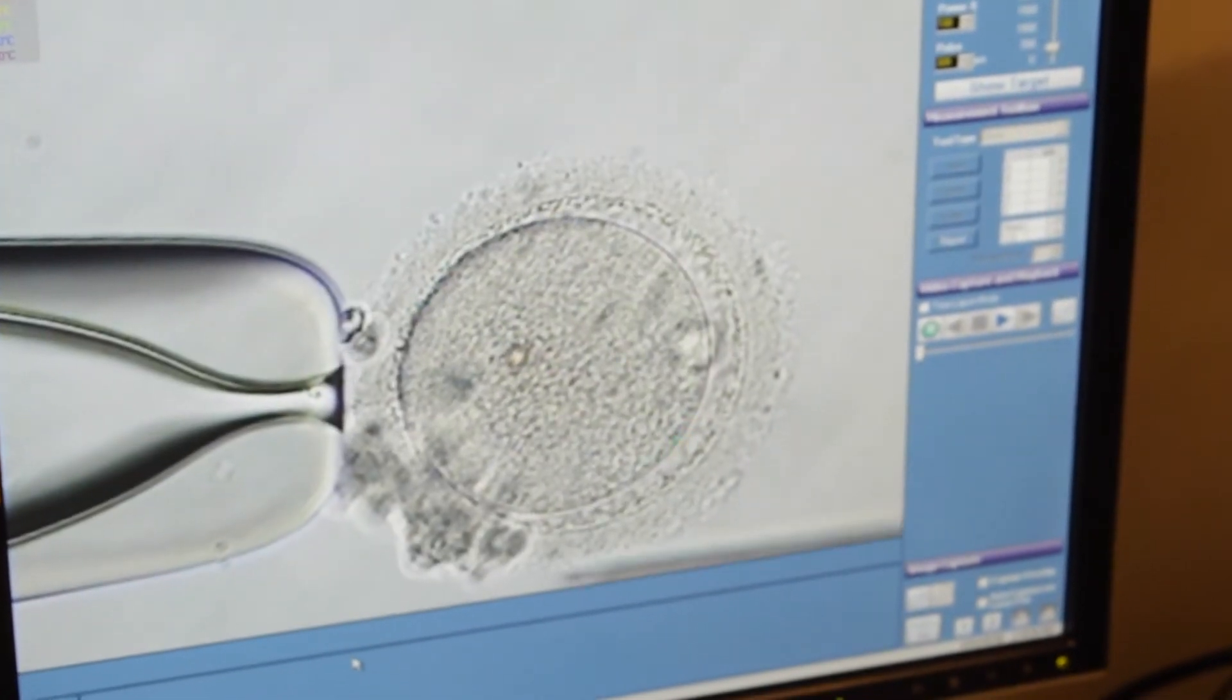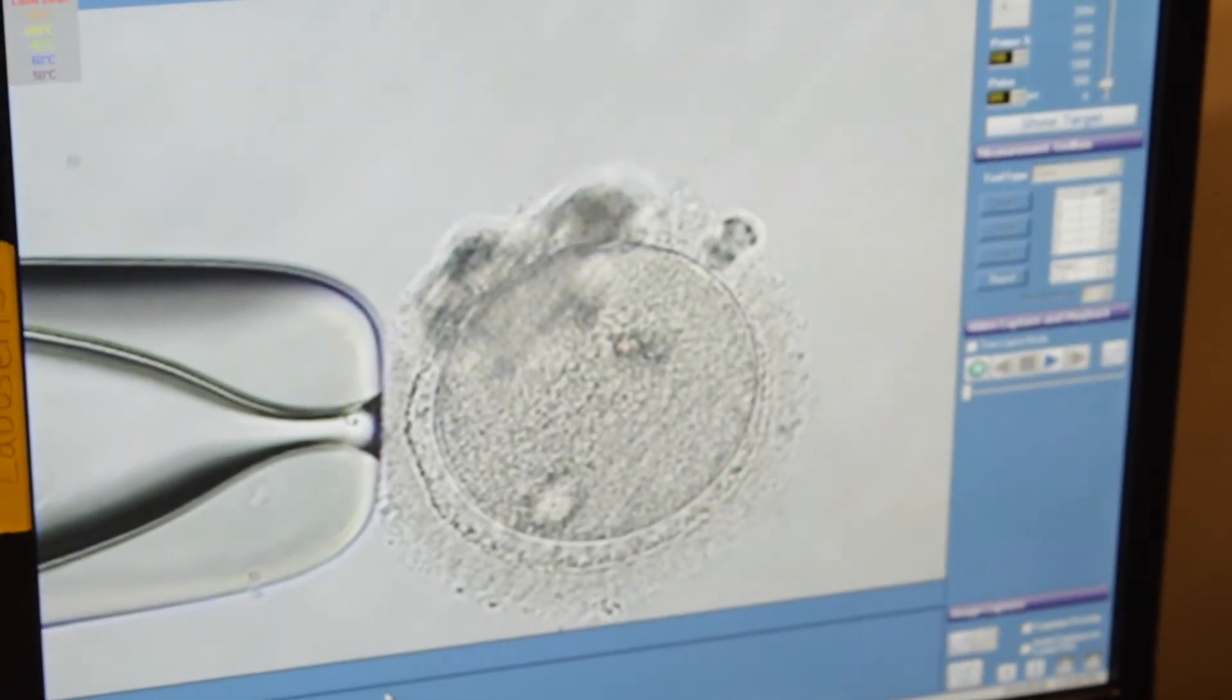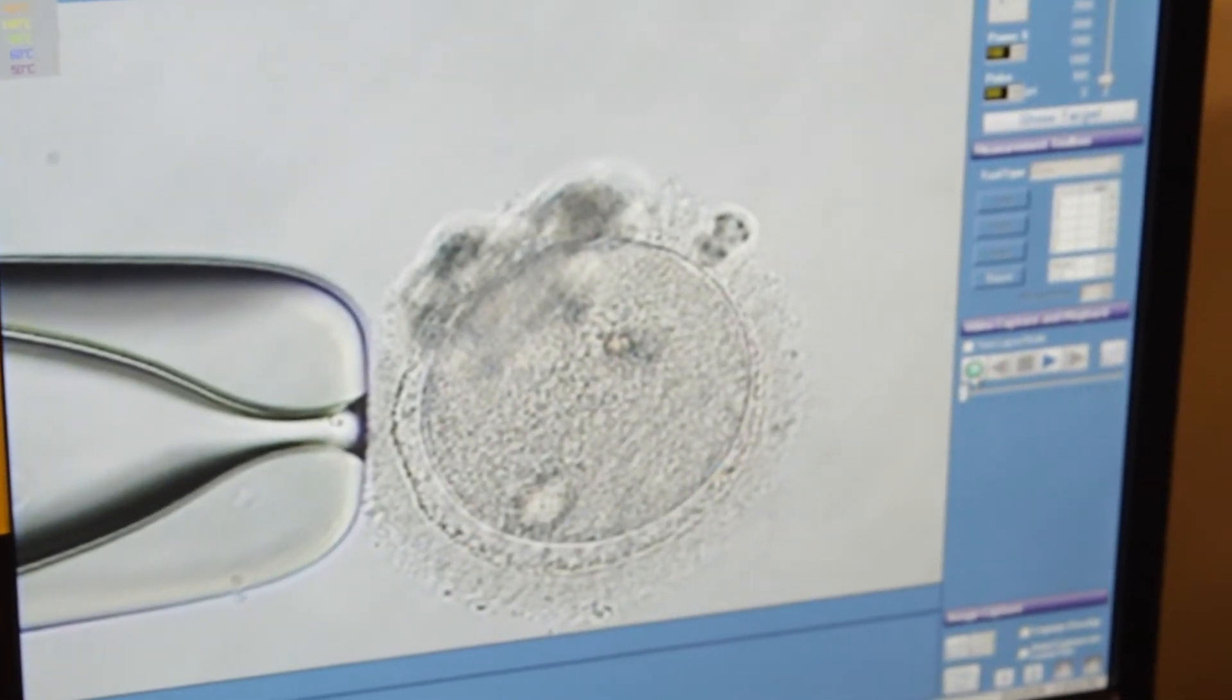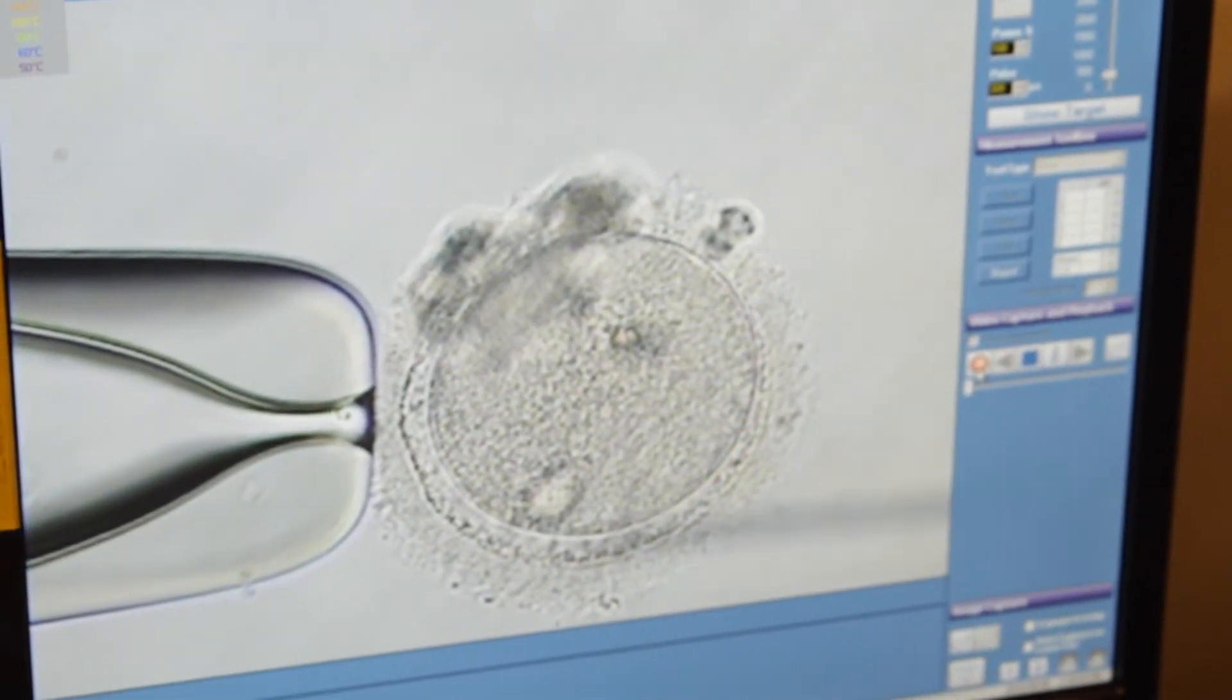Orientation of the oocyte on the holding pipette is very important, and data within our lab has shown that we get the best results when holding the polar body at a 7 o'clock position.